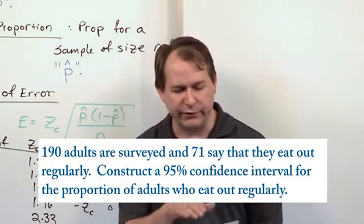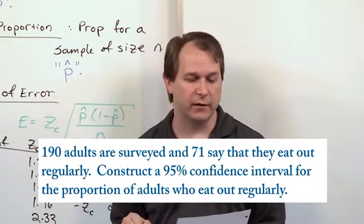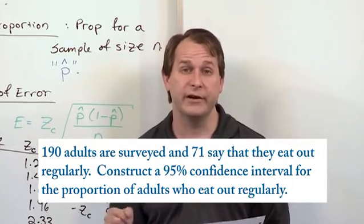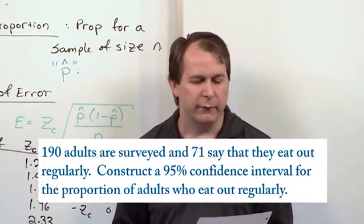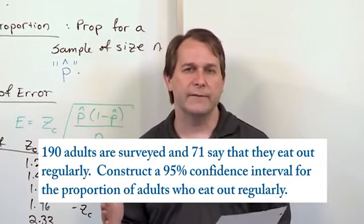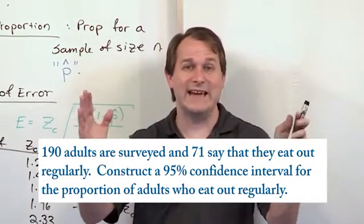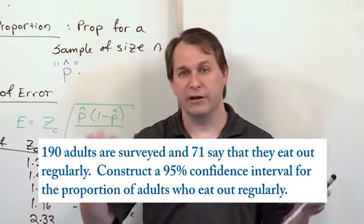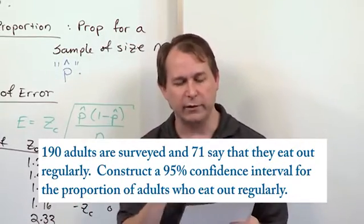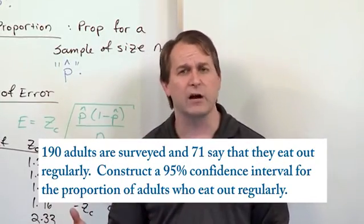We can't ask everybody, so we sample 190 adults and get an answer: 71 say they eat out regularly. From that information, we want to calculate a confidence interval that will contain the proportion of people in the country who eat out regularly. We want to do it at 95%, which is a pretty high confidence level.